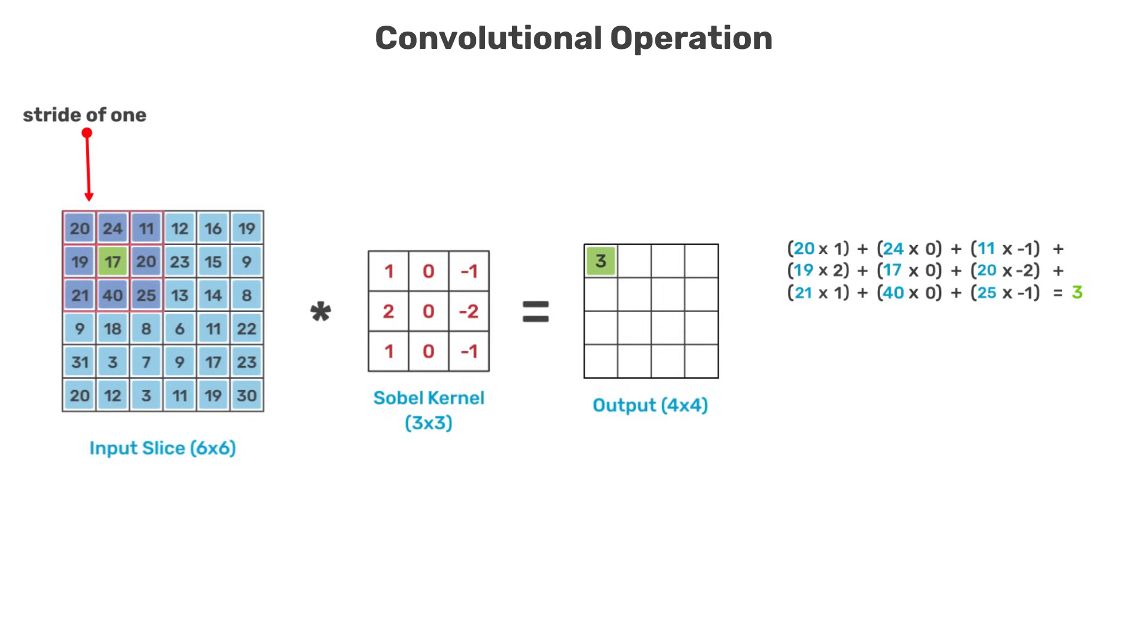Sliding the filter one pixel at a time corresponds to a stride of 1. The filter location is shown in dark blue and this region is also referred to as the receptive field.